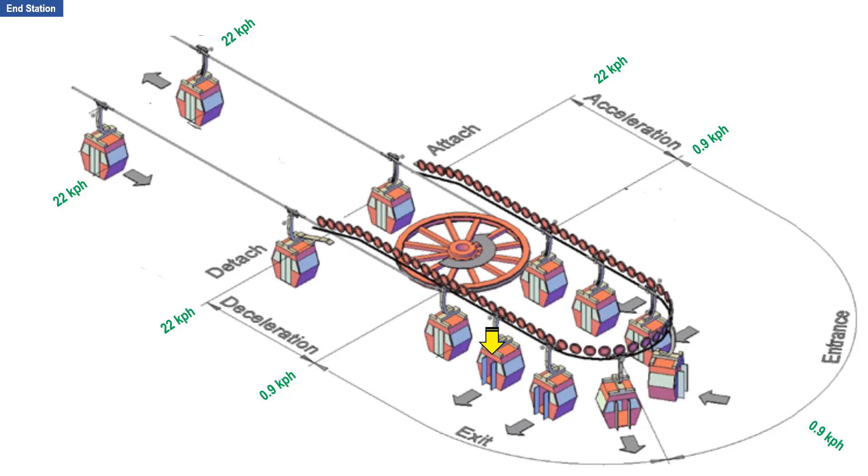Passengers deboard. Being an end station, the cabins loop around at the same constant speed. 0.9 kph is the safe constant speed for deboarding and boarding. On the other side of the station is where passengers board. When the cabin reaches here, the door closes. At this point, the cabin is being accelerated. When the acceleration reaches 22 kph here, the cabin grip instantaneously attaches to the cable.